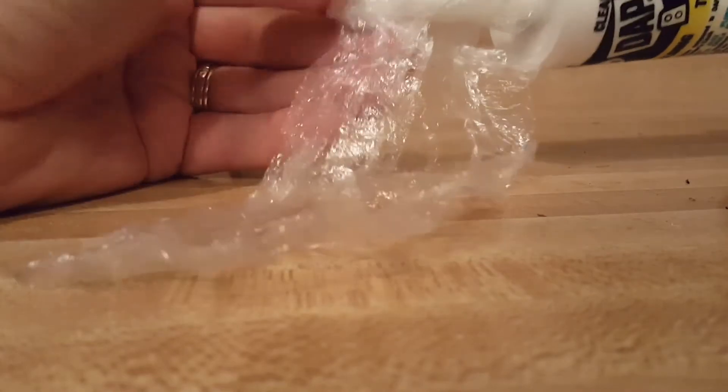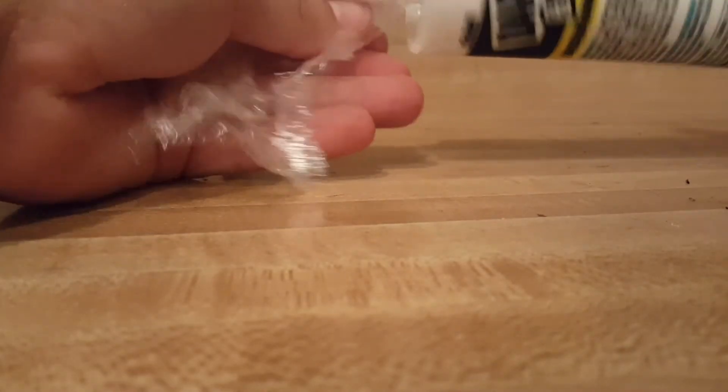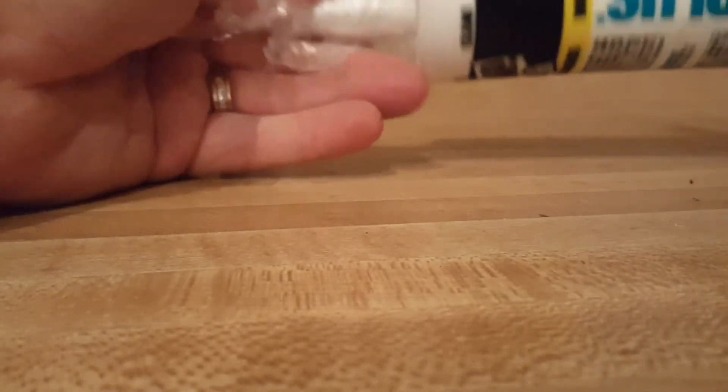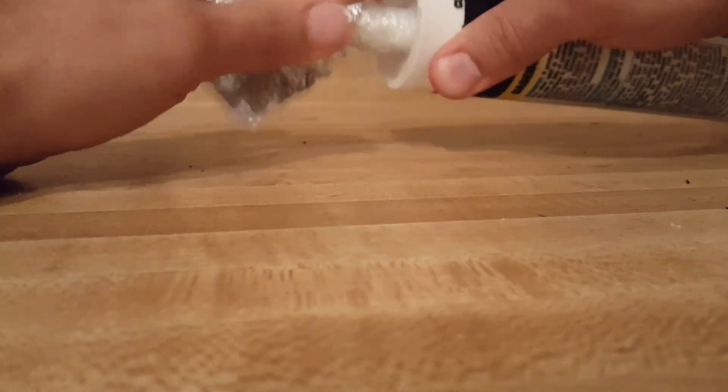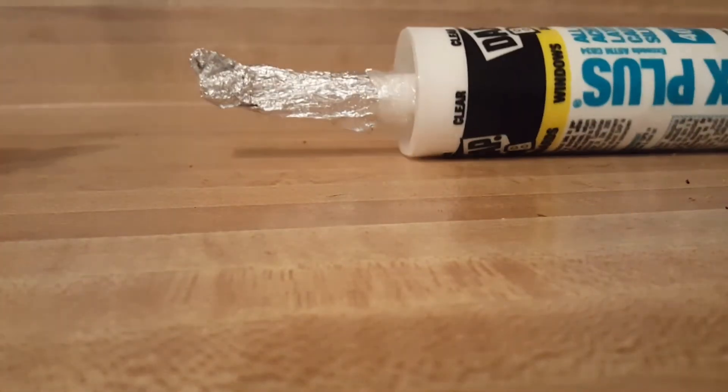I just kind of wrapped it around the end when I was done using it and folded it over and put this on nice and tight. Then I grabbed a little tiny piece of tin foil and just pushed it on here like so and pinched it up and threw it in the garage for when I would use it next.